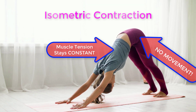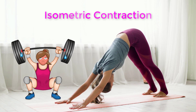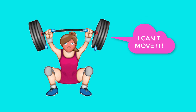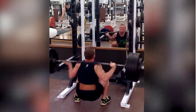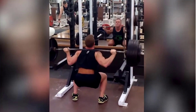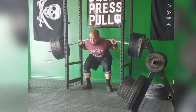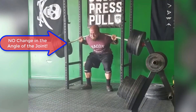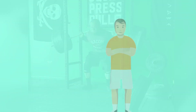An isometric contraction occurs as the muscle produces tension without changing the angle of a skeletal joint. Isometric contractions involve sarcomere shortening and increasing muscle tension, but do not move a load because the force produced cannot overcome the resistance provided by the load. For example, if one attempts to lift a hand weight that is too heavy, there will be sarcomere activation and shortening and ever-increasing muscle tension, but no change in the angle of the joint.